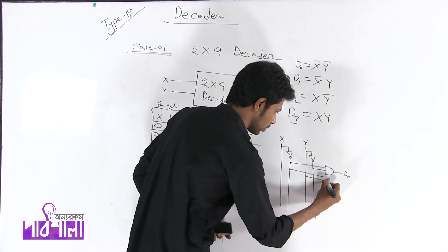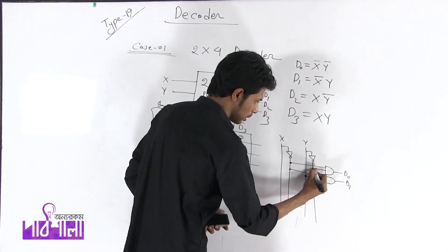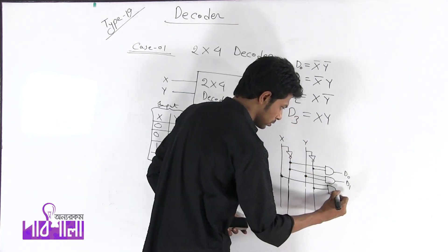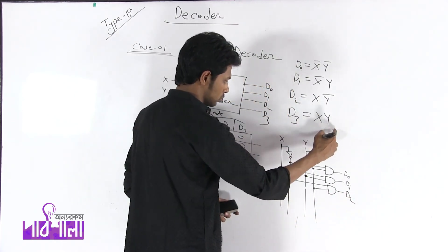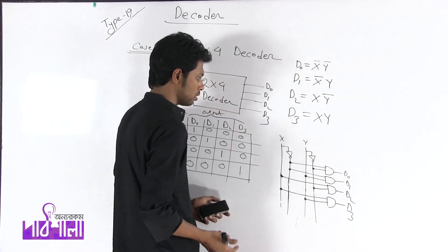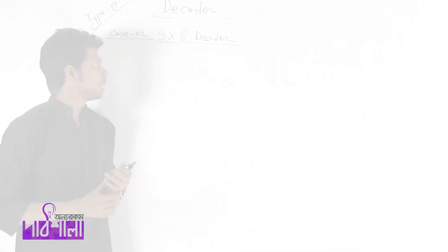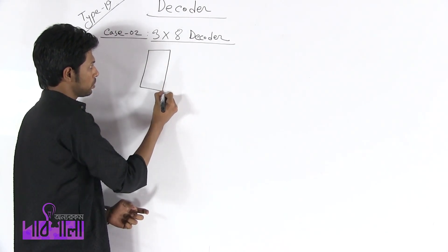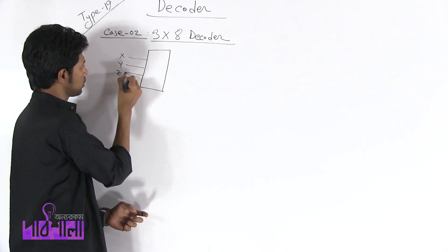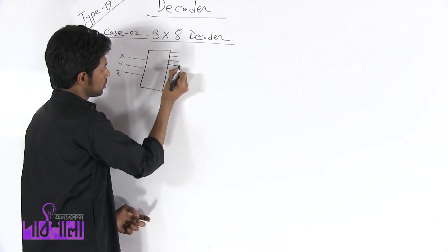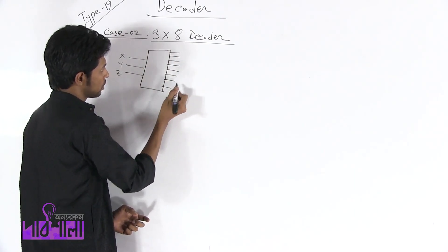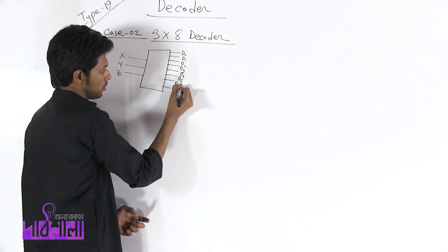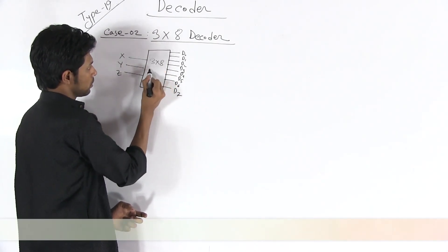X' is the complement giving D1. So the connection between the gate inputs and X·Y gives D0. The decoder outputs equal: D0 = X'Y', D1 = X'Y, D2 = XY', D3 = XY. Now let's state the 3-into-8 decoder with inputs X, Y, Z and outputs D0 through D7, which is a 3-into-8 decoder.